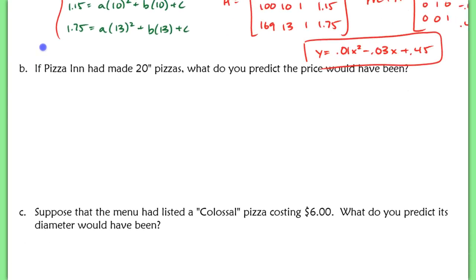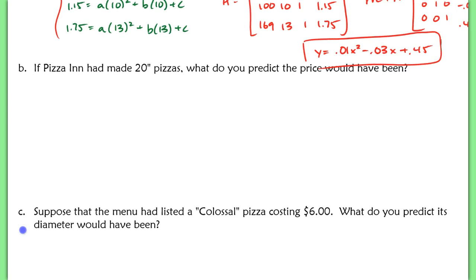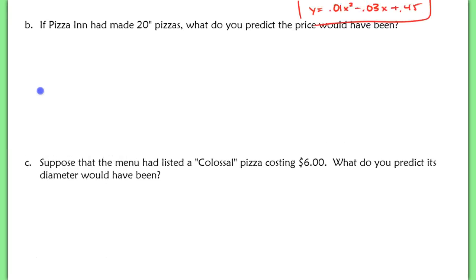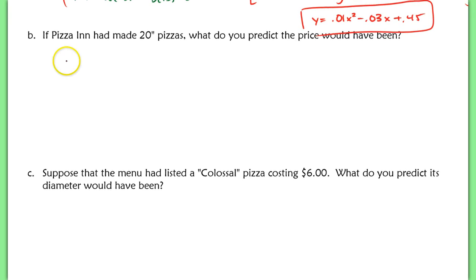Now we're going to answer some questions based off of that particular model. Like in part B here, where it says if the pizza had made 20-inch pizzas, what do you predict the price would have been? So here they're saying let x equal 20 and input this. You can do this one of two ways. You can do this algebraically, where you're going to plug in 0.01 times 20 squared and evaluate that in your calculator.